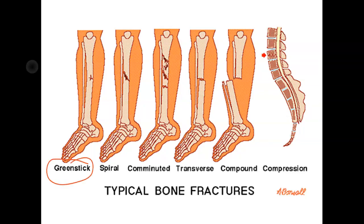First is the greenstick fracture. This usually happens in small or young children — the bone breaks but not completely through. It's like trying to break a green tree branch: it won't snap completely because of flexibility in the collagenous fibers. That's why it's called a greenstick break, and it typically occurs in children.